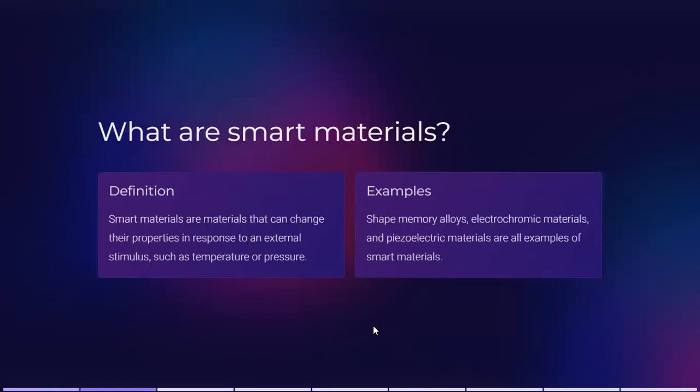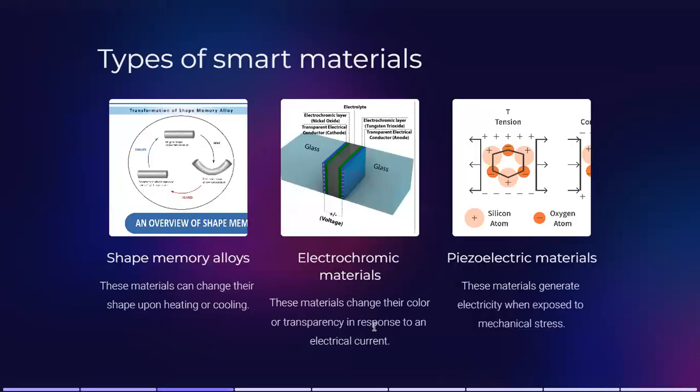First of all, what are smart materials? By definition, smart materials are materials that can change their properties in response to external stimulation such as temperature or pressure. Examples include shape memory alloys, electrochromic materials, and piezoelectric materials.